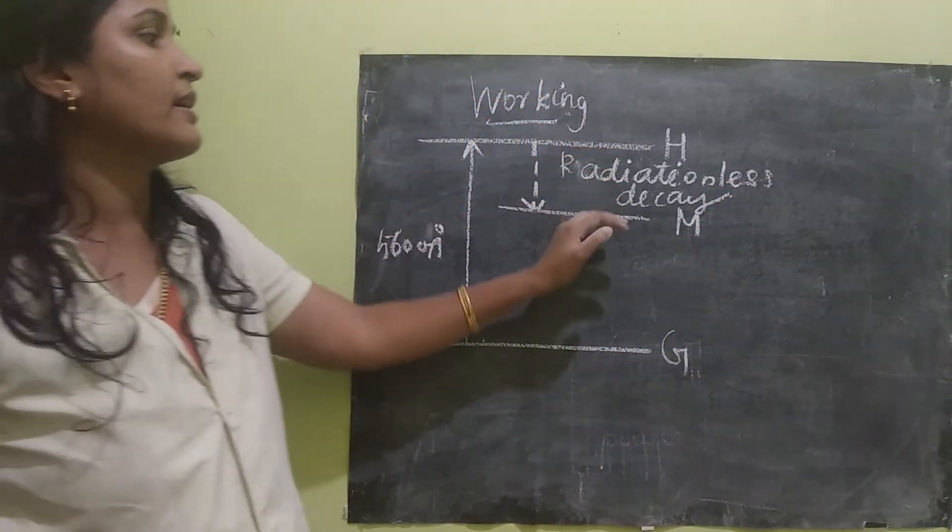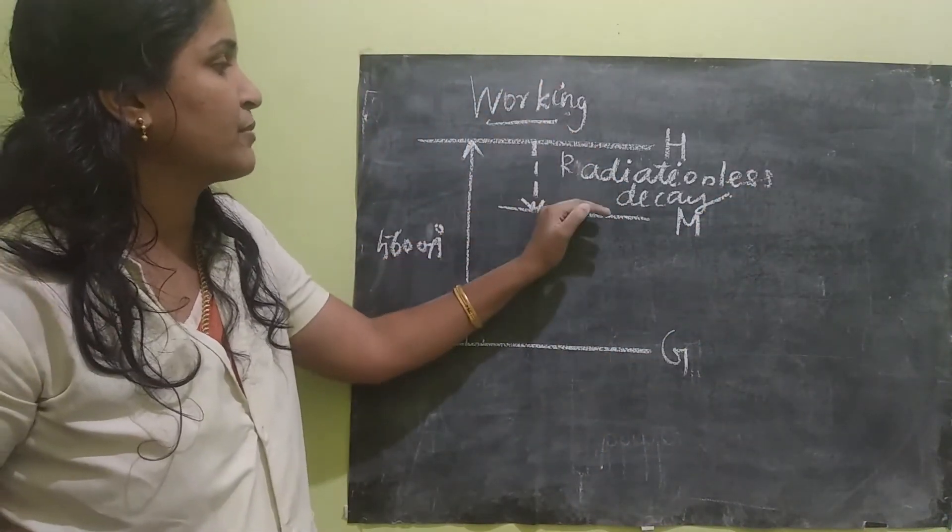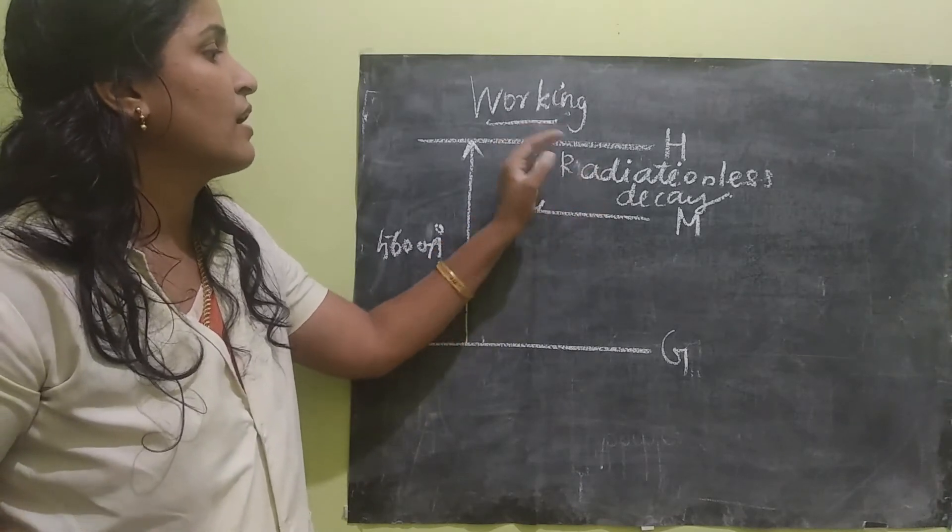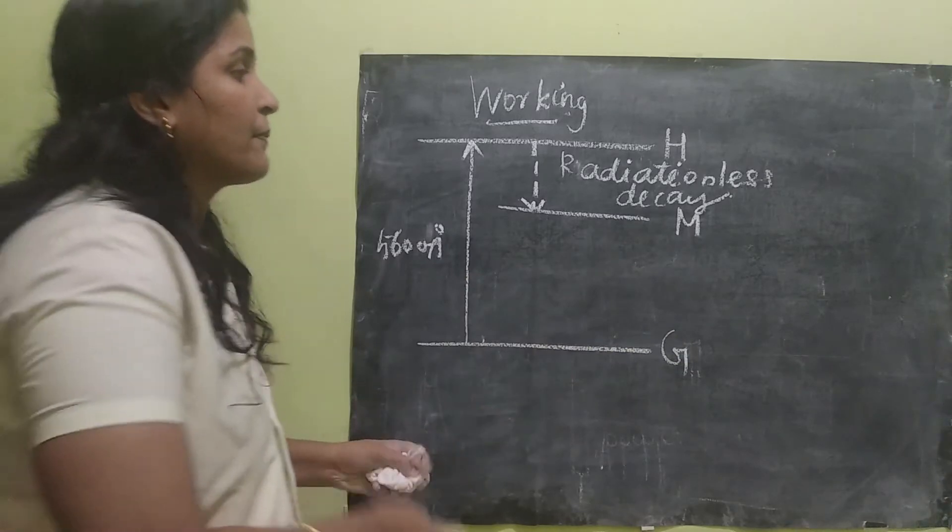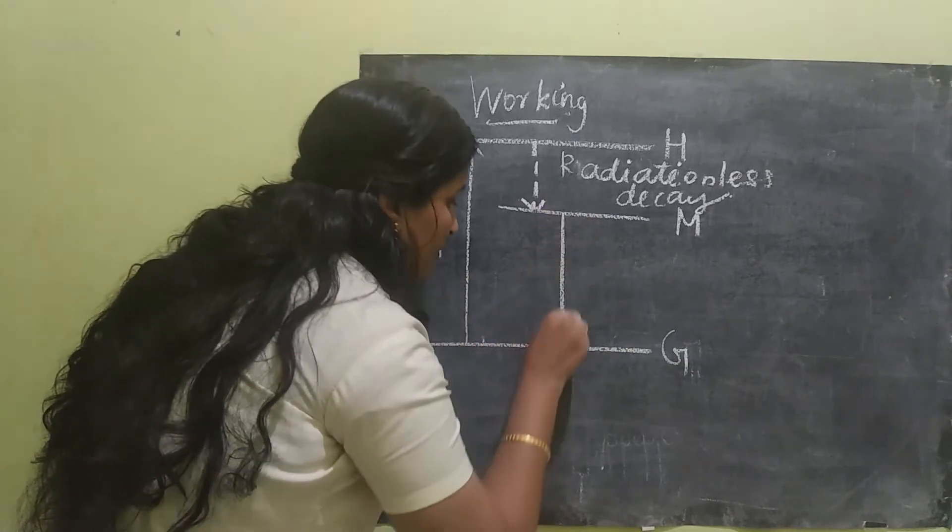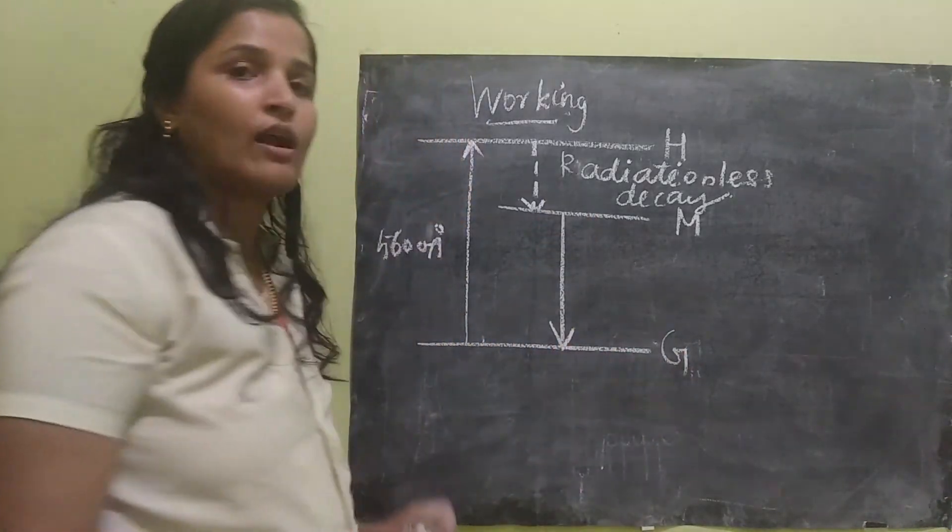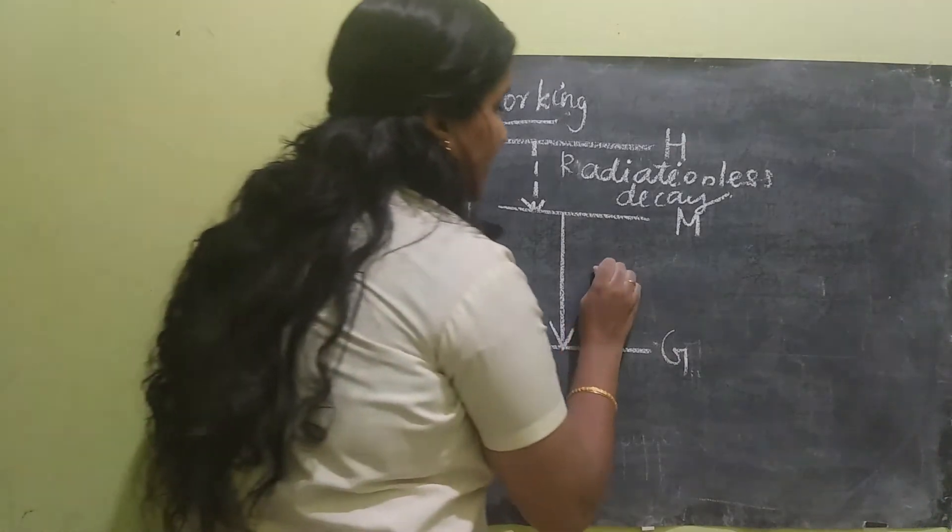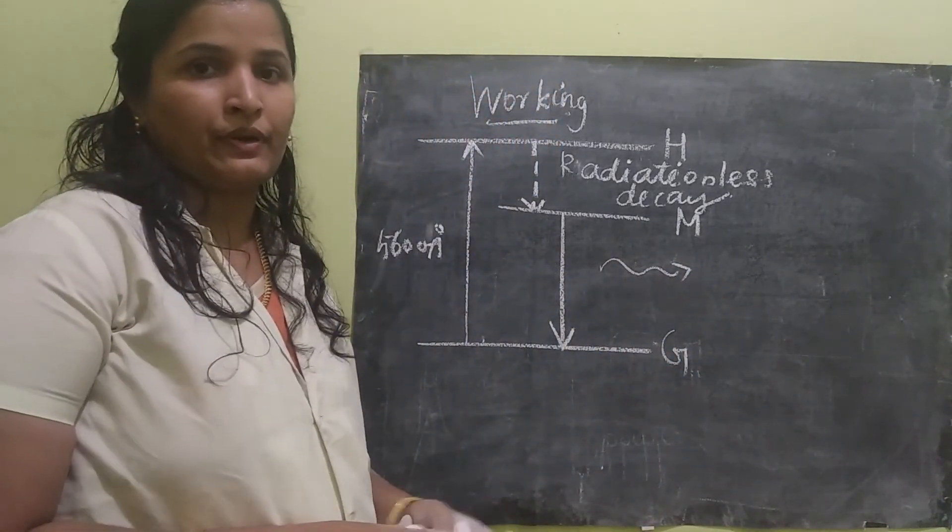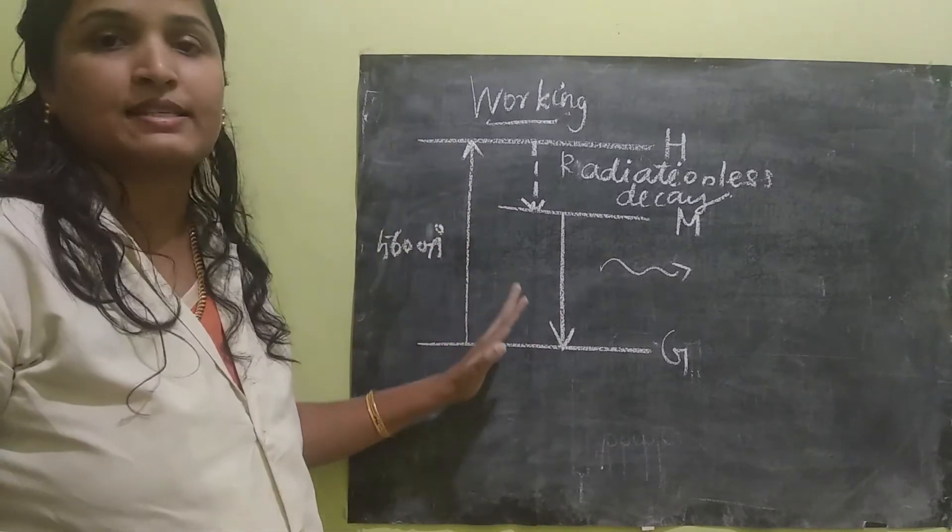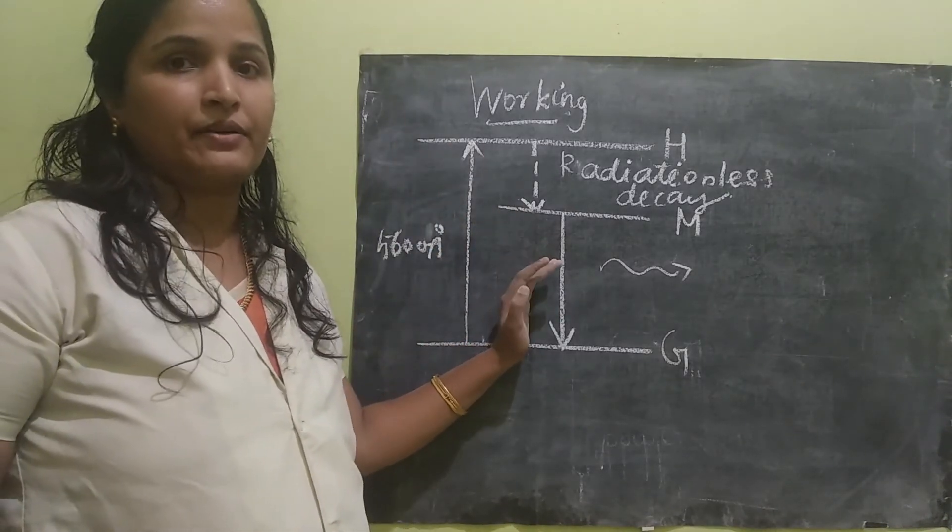After some time, every atom will reach the metastable state. Now what will happen? It will reach the ground state by emitting the laser beam. So this is the concept of the three level system that we have already studied.